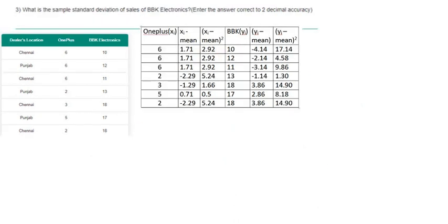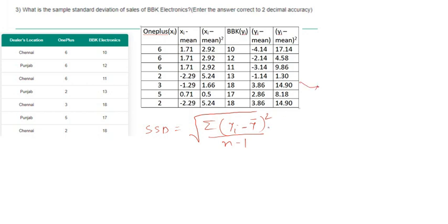In this question we have to find the sample standard deviation of sales of BBK Electronics. The formula for sample standard deviation is SSD equals root over summation of (yi minus y-bar) whole square by (n minus 1). I've already calculated the values from this table. The summation of (yi minus y-bar) whole square is 70.86.